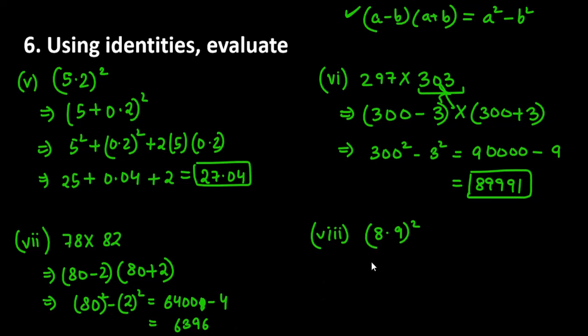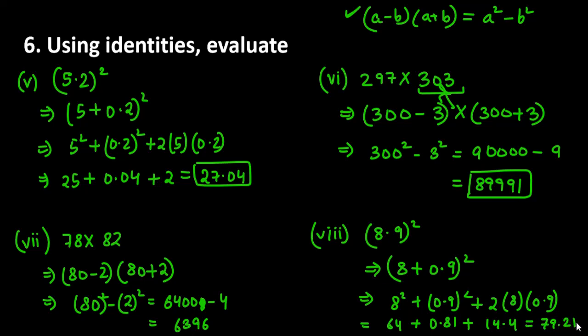Then we have 8th part with 8.9. We can write it as 8 plus 0.9 whole square. First term square, second term square, then 2 into A into B. 8 square is 64, 0.9 square is 0.81, then 2 into 8 into 0.9 is 14.4. Add these all terms and you will get 79.21.